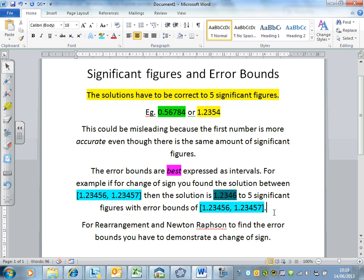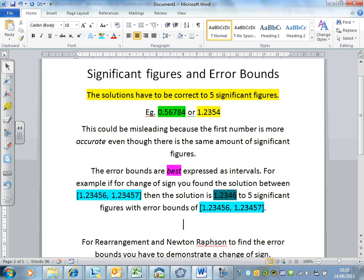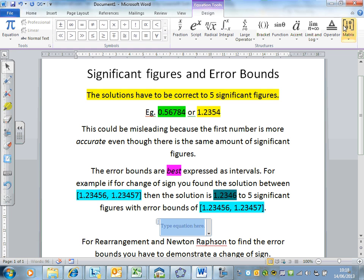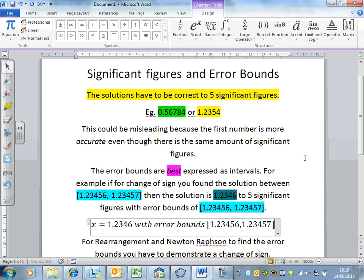If we write this in the report, we'd write it as x equals 1.2346 with error bounds between 1.23456 and 1.23457.